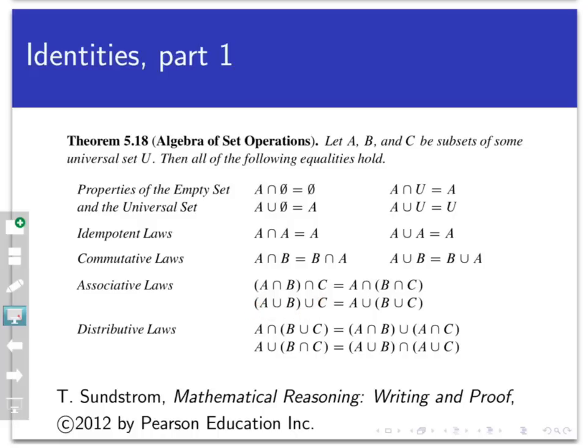The distributive laws give rules for how to distribute an intersection across a union, and we get results like A intersect (B union C) equals (A intersect B) union (A intersect C). This last distributive law might remind you of a logical equivalence law also called the distributive law, where we distribute a conjunction over a disjunction — they're very similar and logically related to each other.